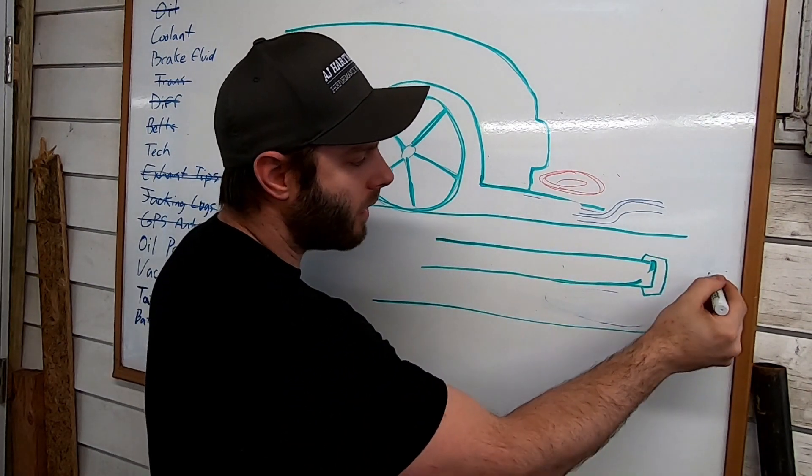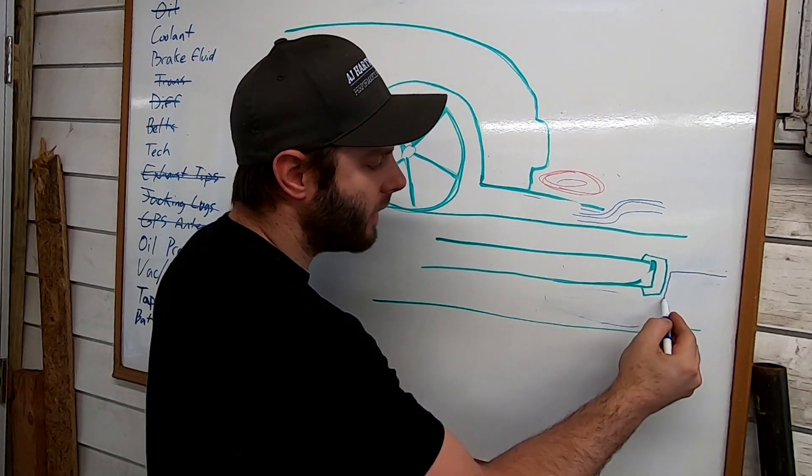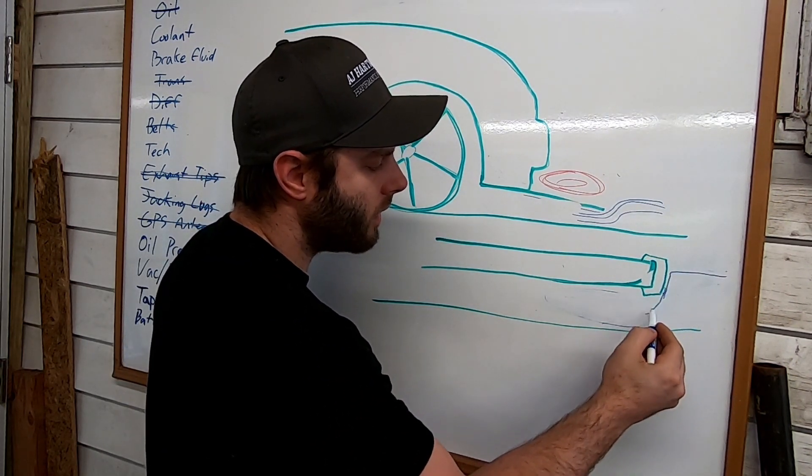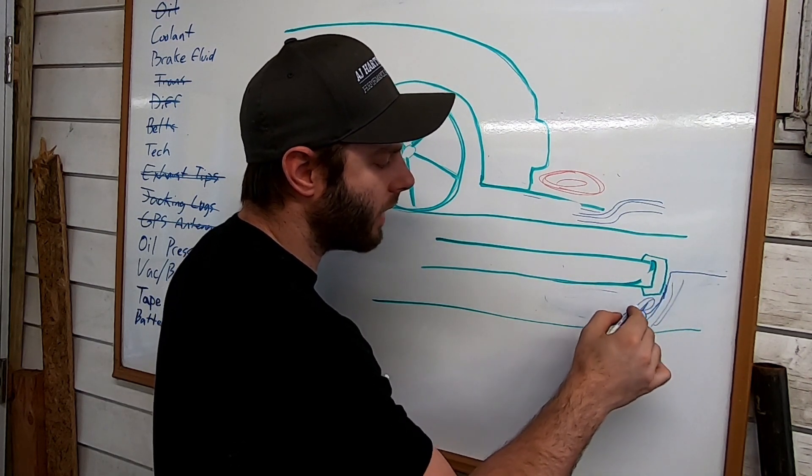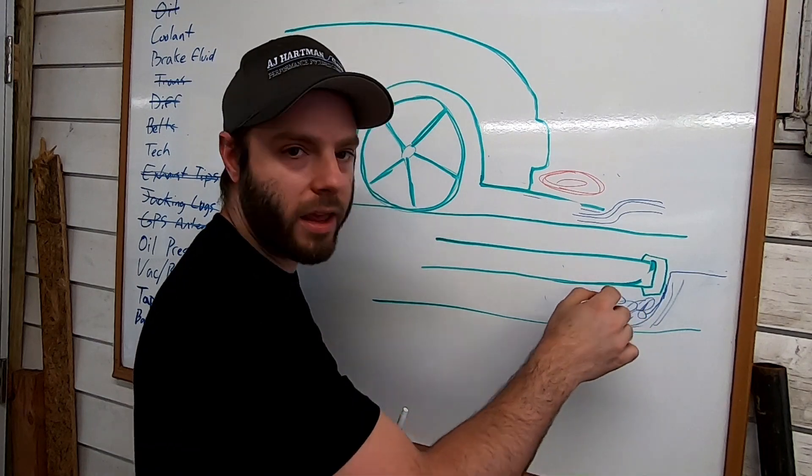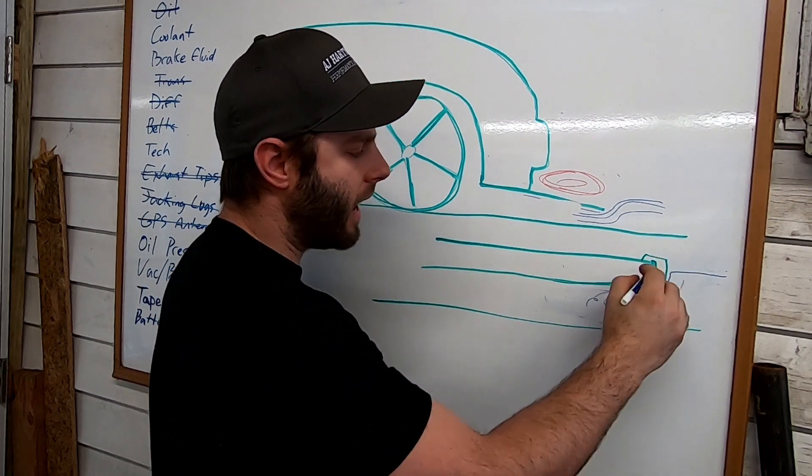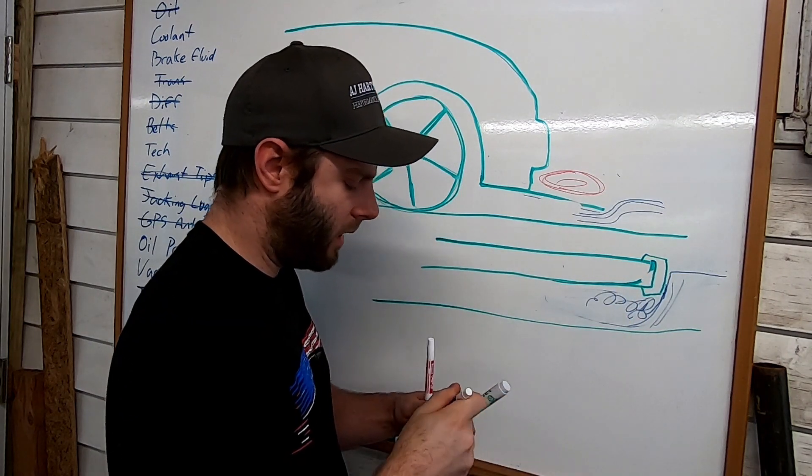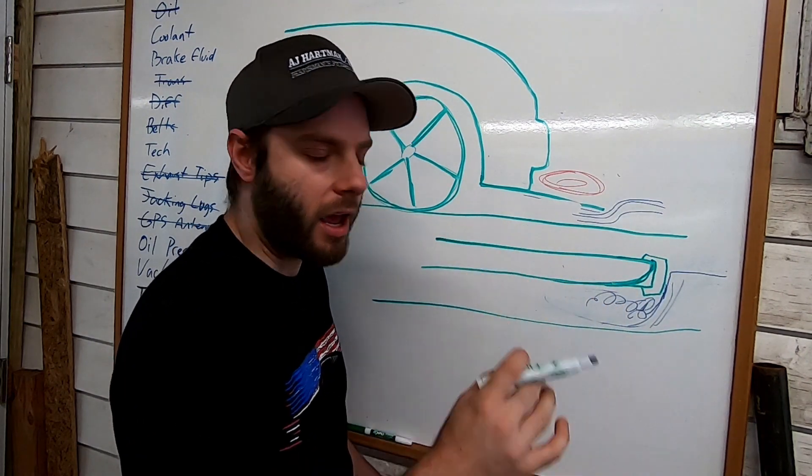This hard edge right here, air just kind of hits it and you end up with a separation zone right here, right off the bat. So you definitely don't want one of those edge guards, and if you can help it, try and put a little bit of a radius on the leading edge of your splitter.